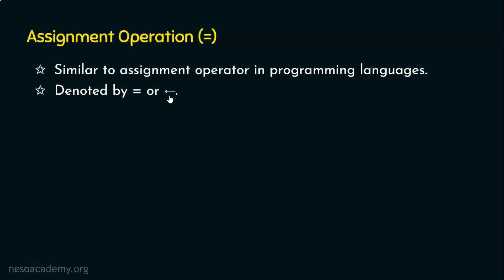What type of operator is the assignment operator — unary or binary? Since assignment needs both a left-hand side and a right-hand side, it obviously involves two operands. Hence, the assignment operation in relational algebra is also classified as a binary operator.